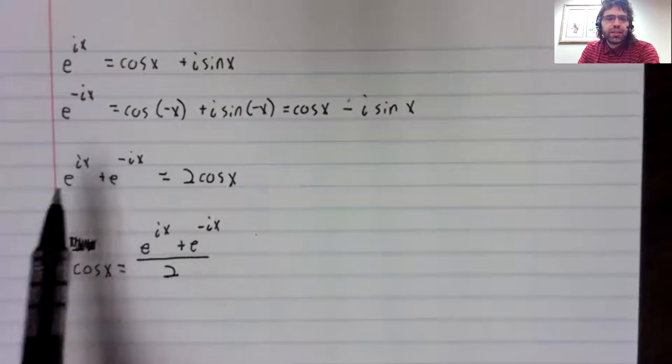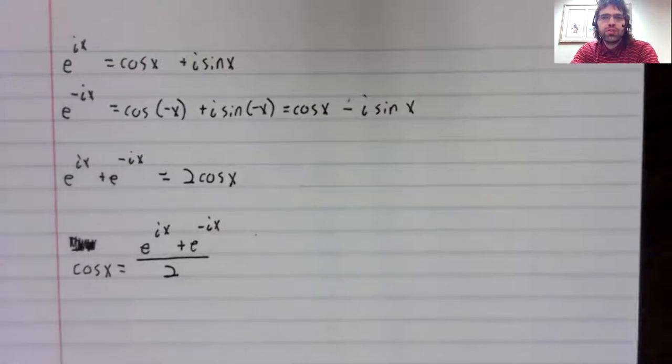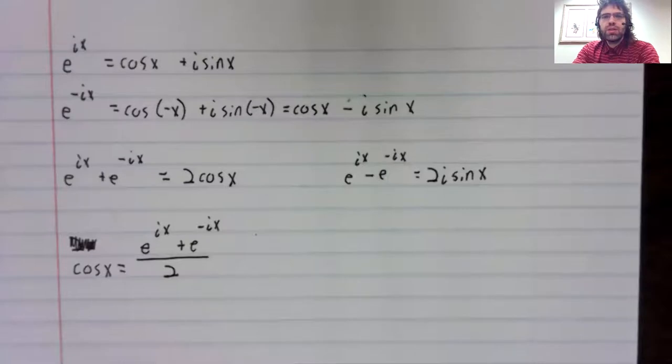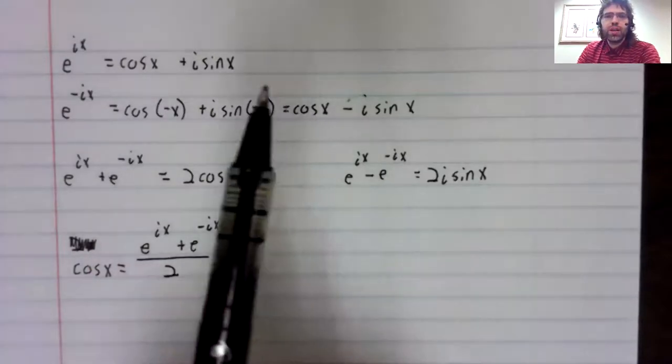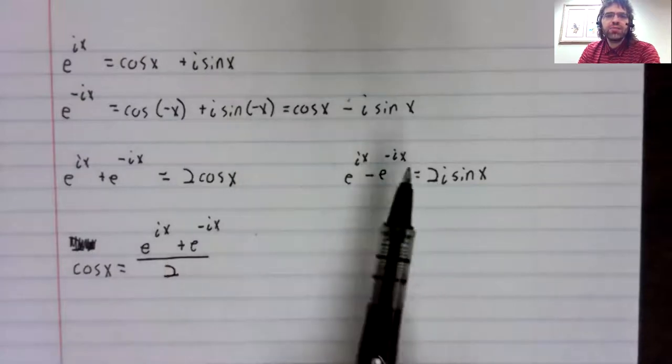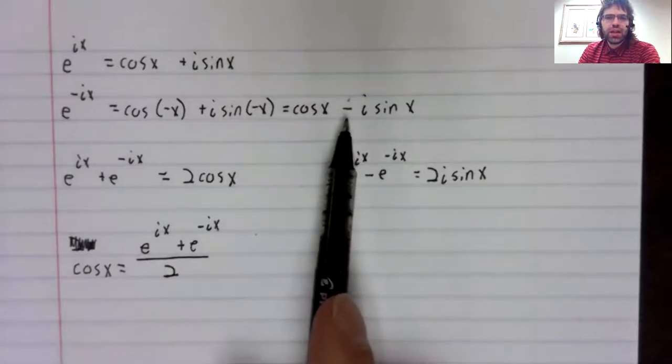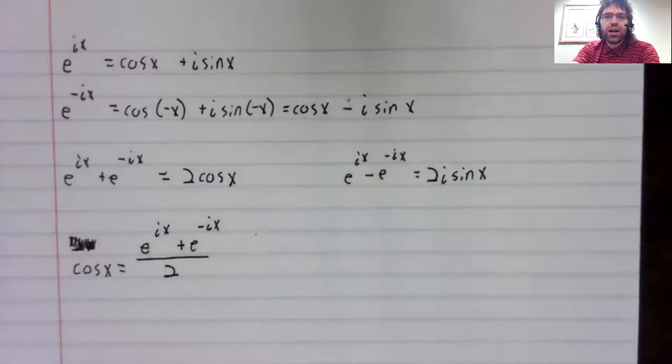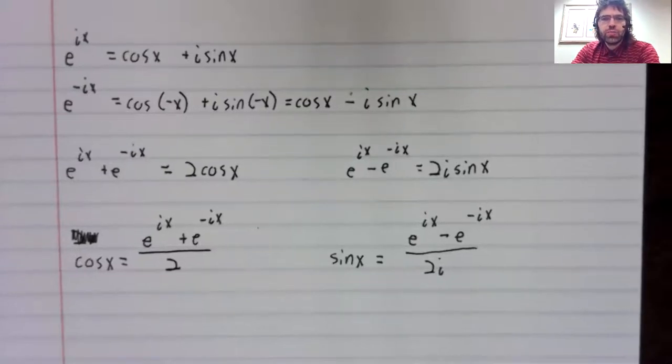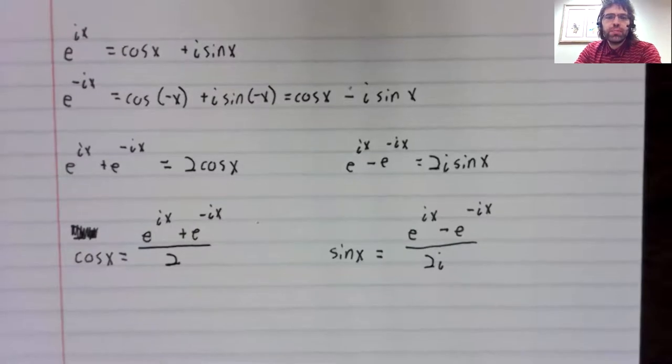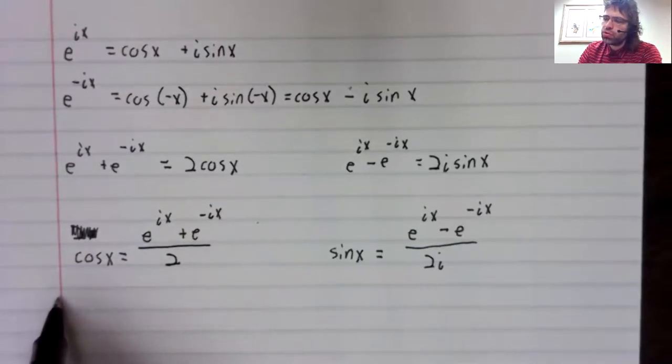we subtracted these terms, it would be the cosines that cancel out. Whereas the sine minus the negative sine is twice the sine. Do subtraction, division, and we get the sine written in terms of imaginary exponentials.